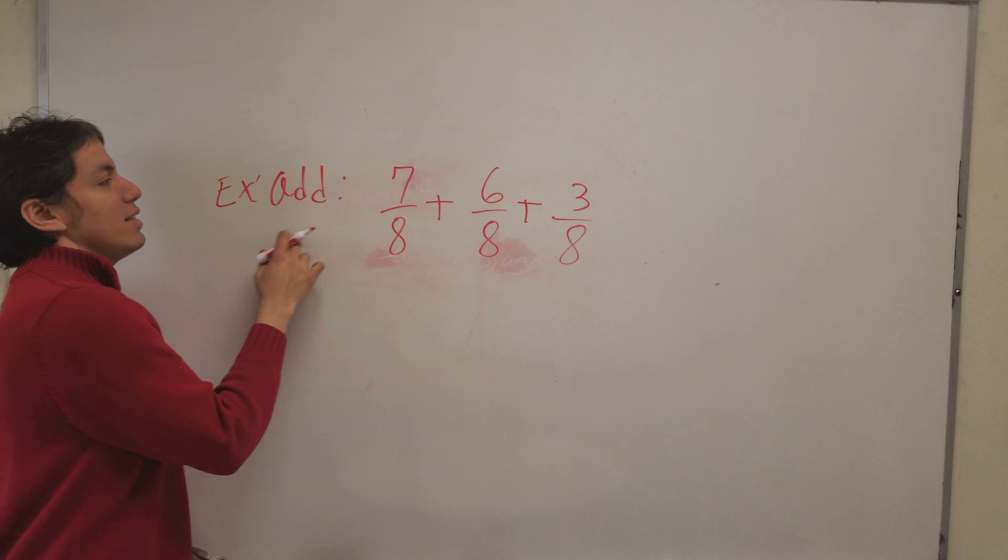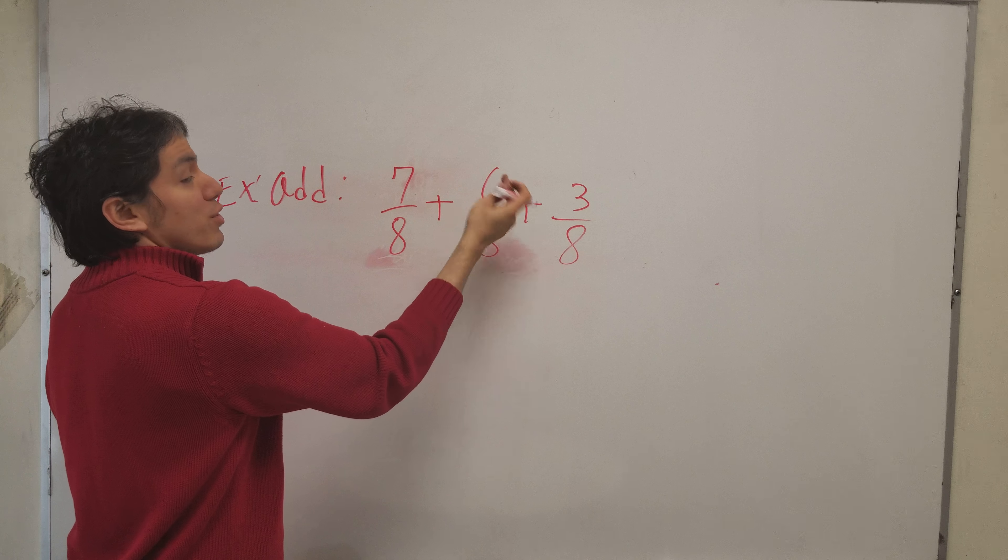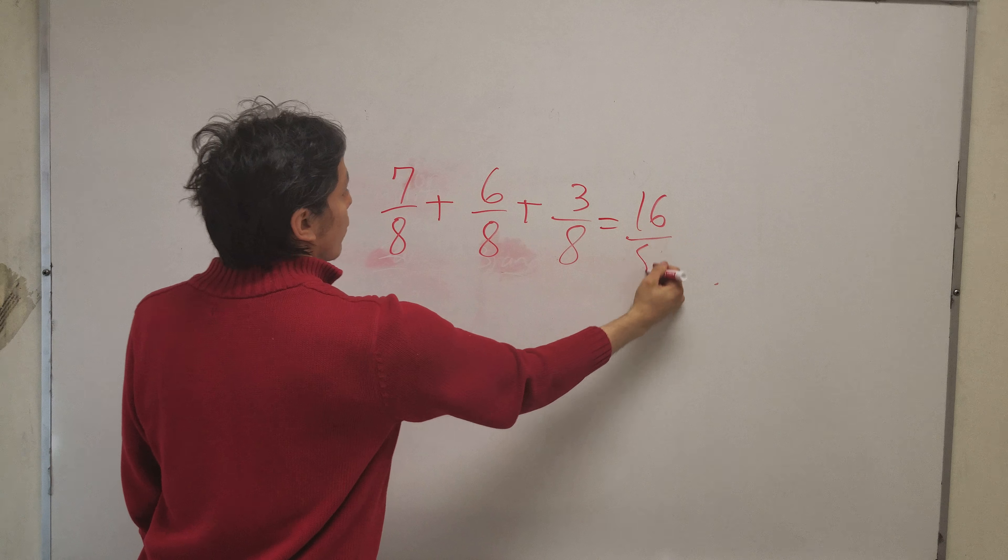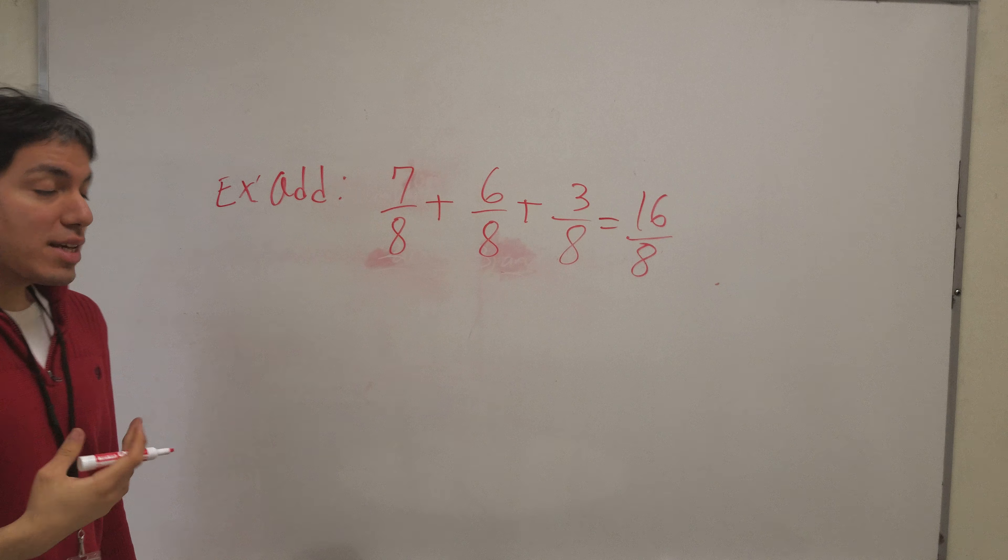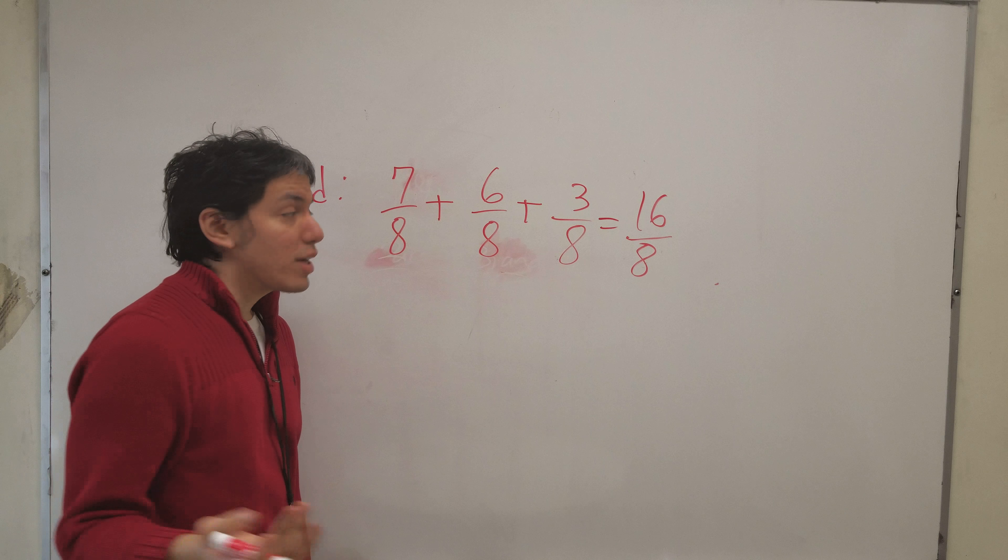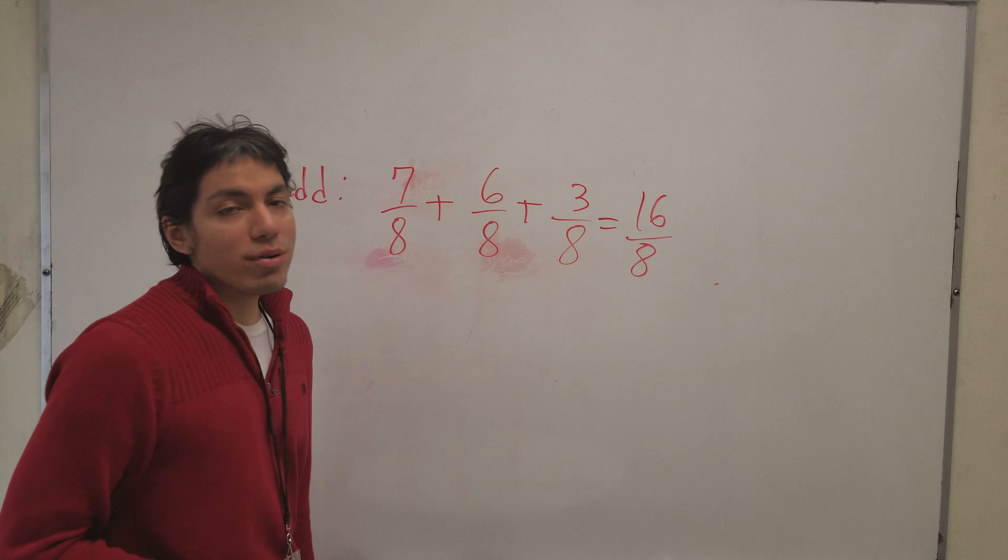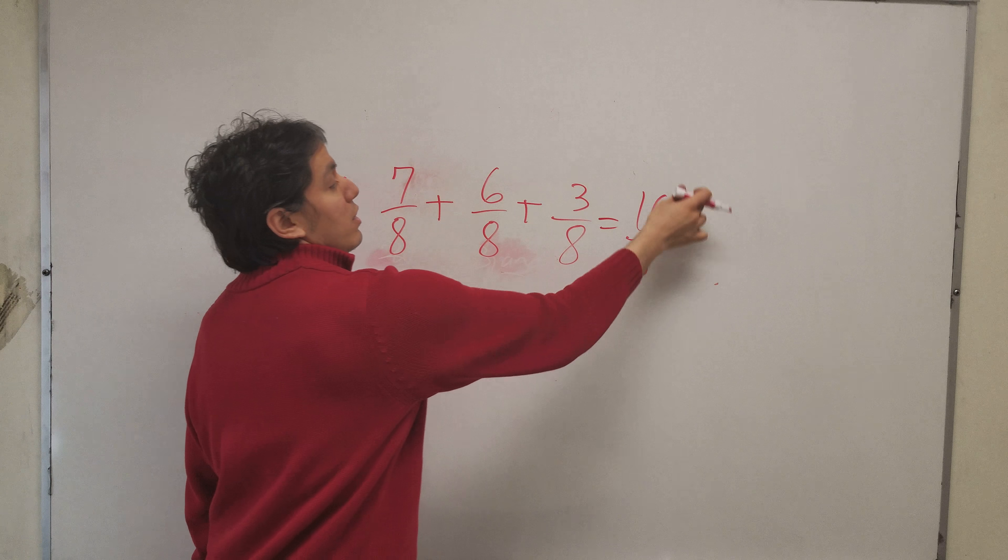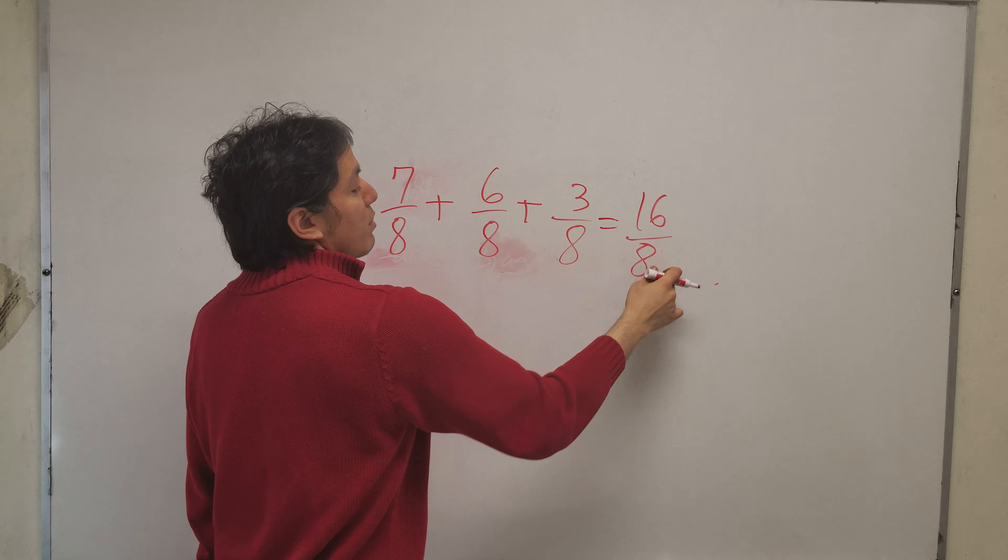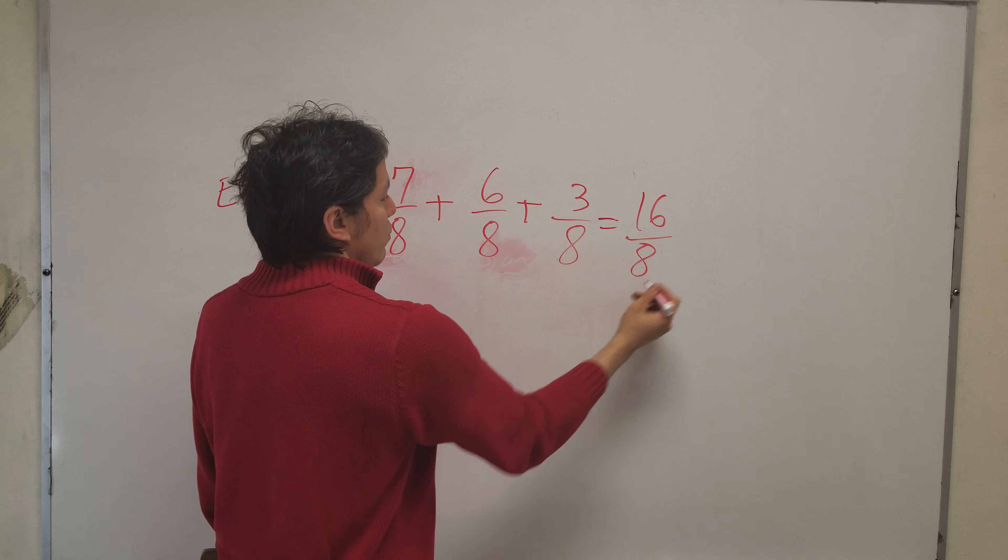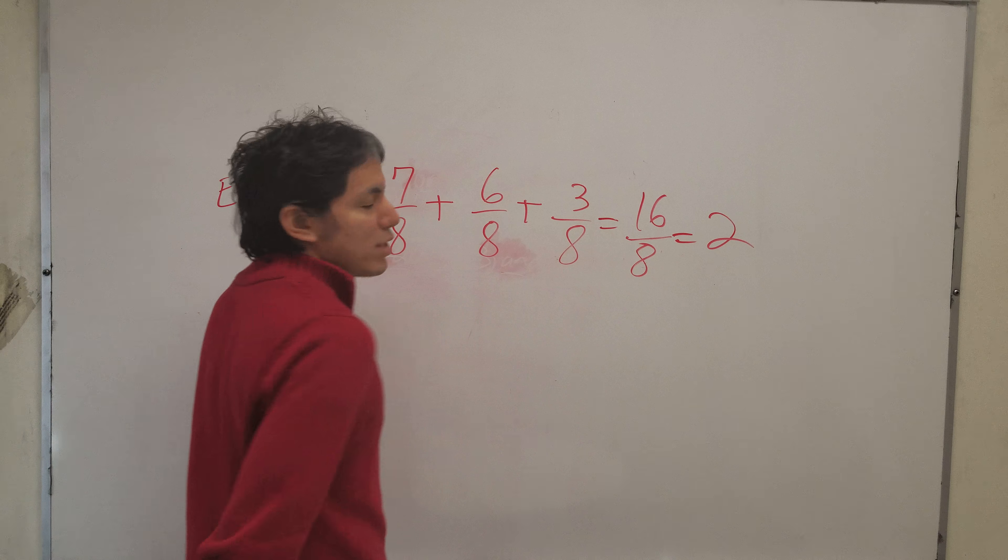So I'm going to add seven plus six which is thirteen, add three more, that's sixteen over eight. The question is am I finished? And the answer to that is no. Why? Because this is improper form. This needs to be improper by making the numerator smaller than the denominator. Basically you have to divide eight into sixteen which is basically two as your answer.